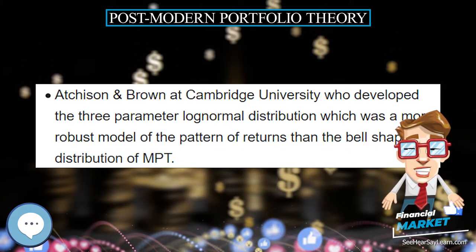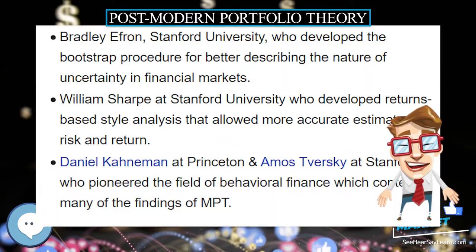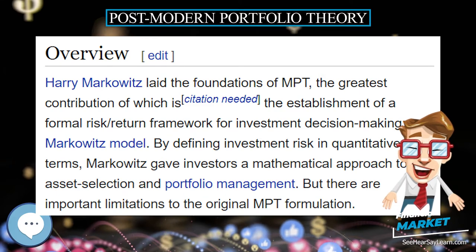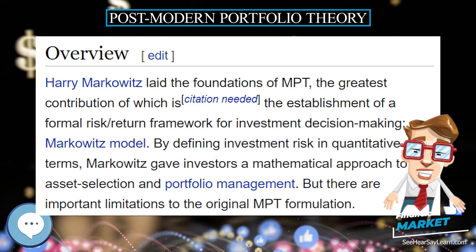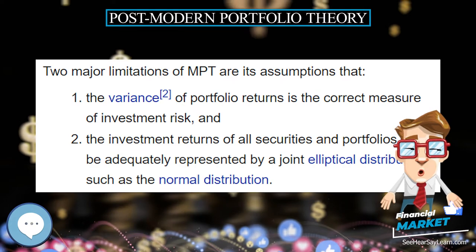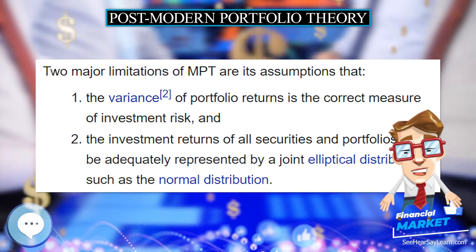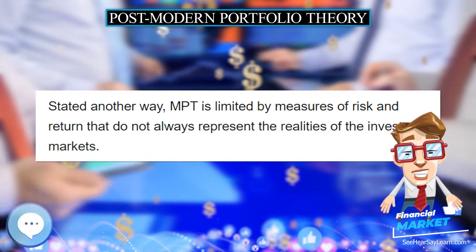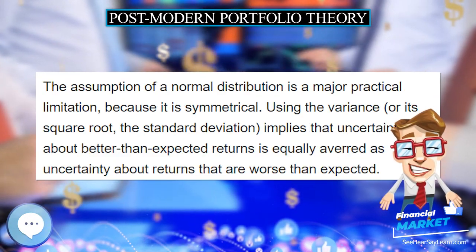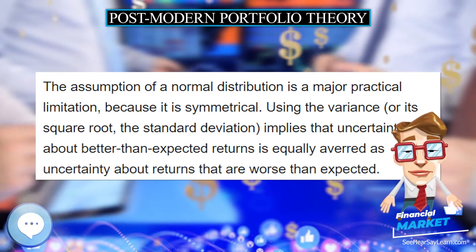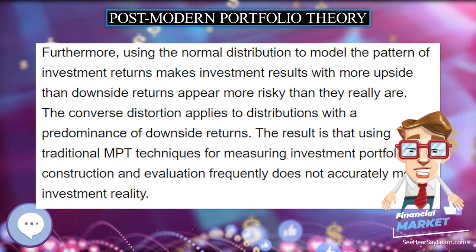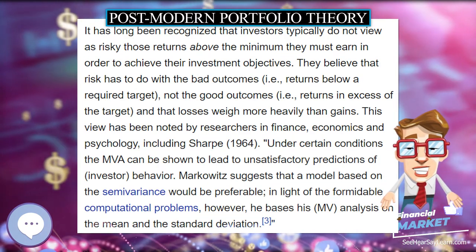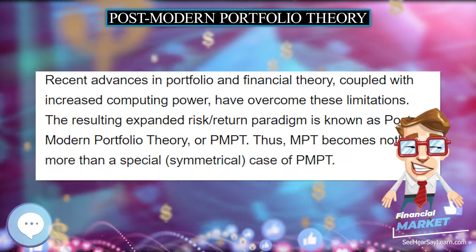The term Postmodern Portfolio Theory was created in 1991 by software entrepreneurs Brian M. Rom and Kathleen Ferguson to differentiate the portfolio construction software developed by their company, Investment Technologies, from those provided by traditional modern portfolio theory. It first appeared in the literature in 1993 in an article by Rom and Ferguson in the Journal of Performance Measurement. It combines the theoretical research of many authors and has expanded over several decades as academics at universities in many countries tested these theories to determine whether or not they had merit.